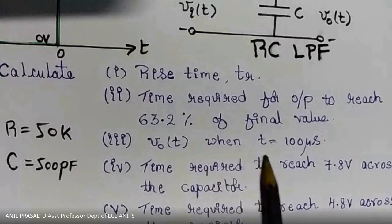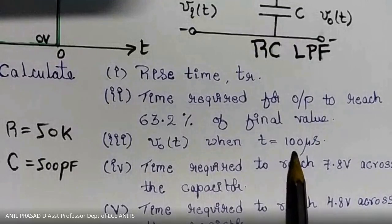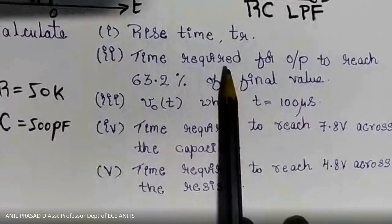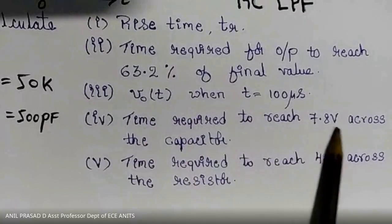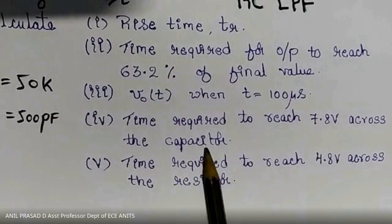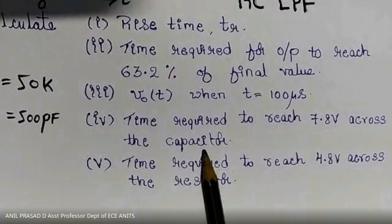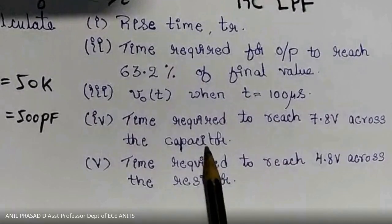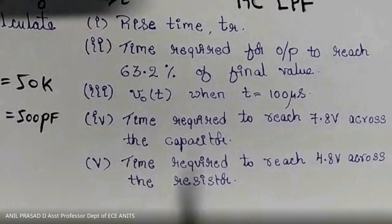Question three is to find the output voltage when t equals 100 microseconds, since the output function is dependent on the time variable t. Question four is to find the time required to reach 7.8 volts across the capacitor.